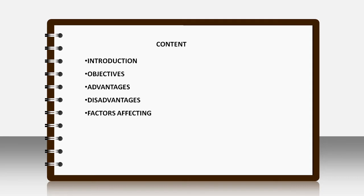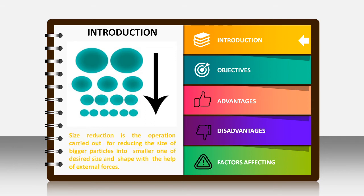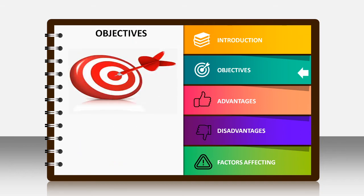Moving toward the introduction — if we divide the term 'size reduction' into two parts, 'size' and 'reduction': size is a physical dimension of the object, and reduction is the process of decreasing the size. As we can see in the figure, the particle size is getting reduced from a bigger particle to a smaller one. So we can define size reduction as the operation carried out for reducing the size of bigger particles into smaller ones of desired shape and size with the help of some external force.